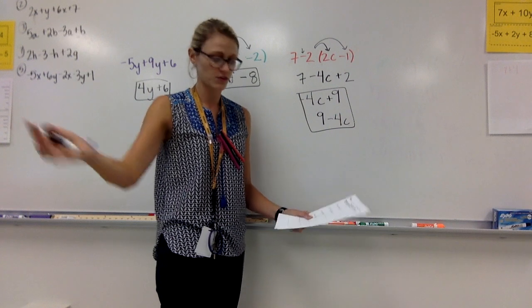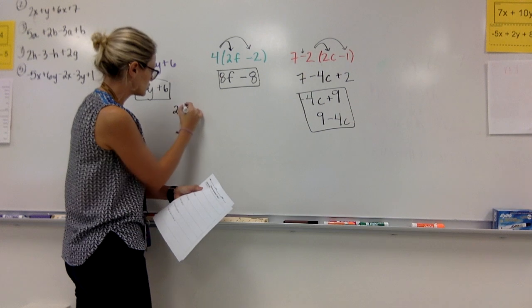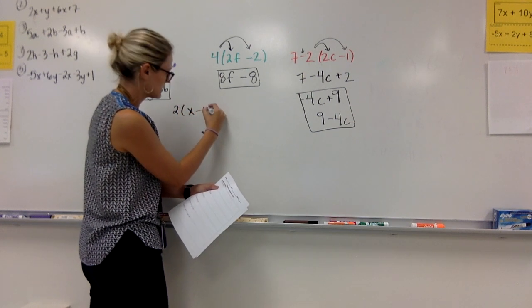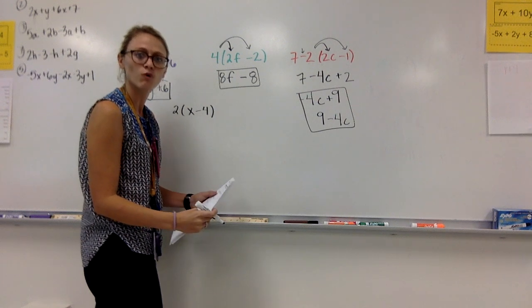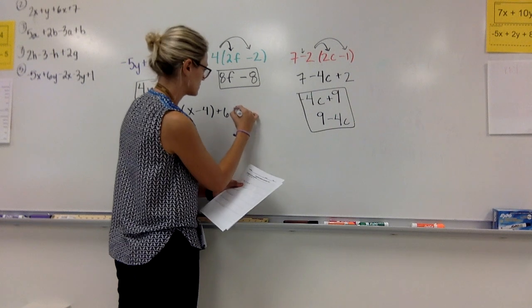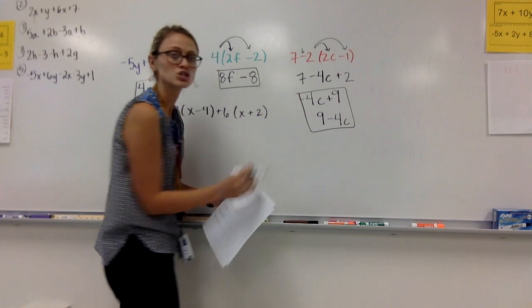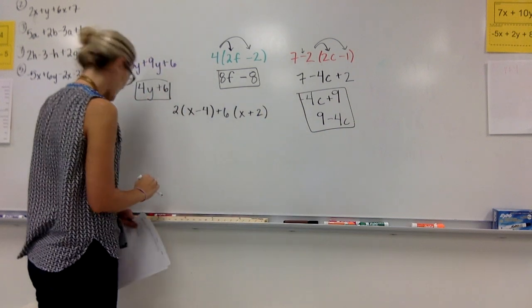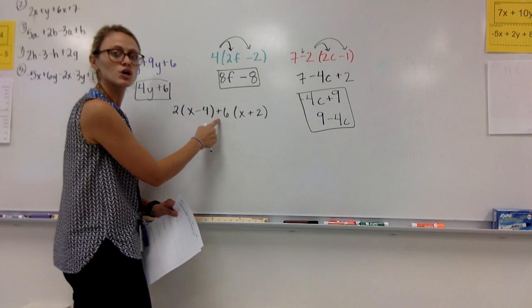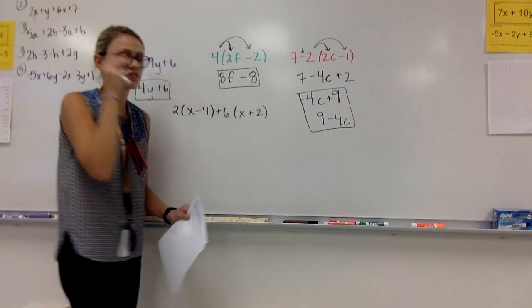I'm going to go a step further with you now. And we're going to look at an example that is 2(x - 4) + 6(x + 2). So now here's an example, 2(x - 4) + 6(x + 2). So in this case, I have two distributions happening.